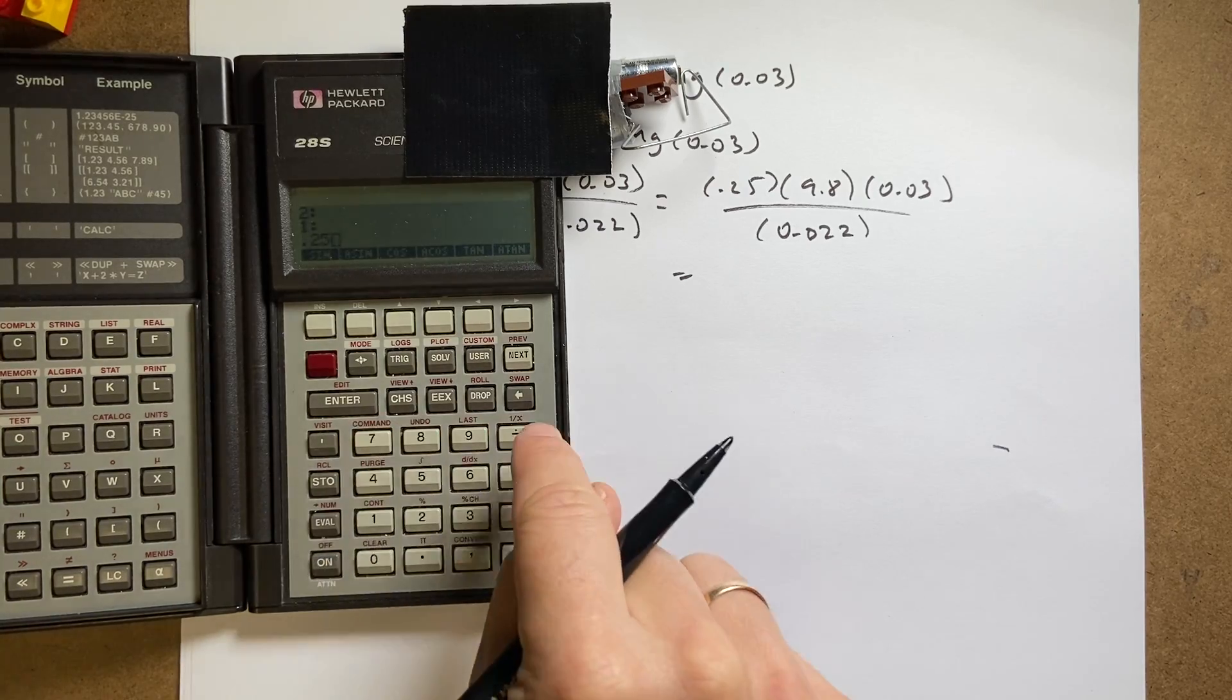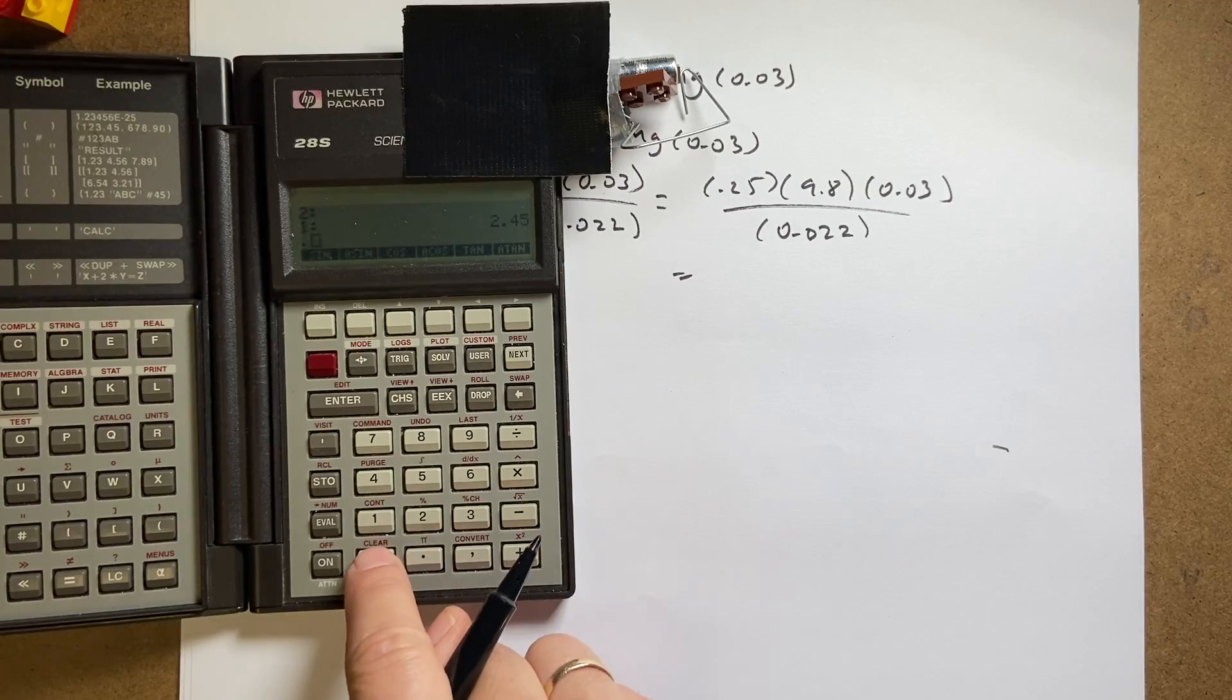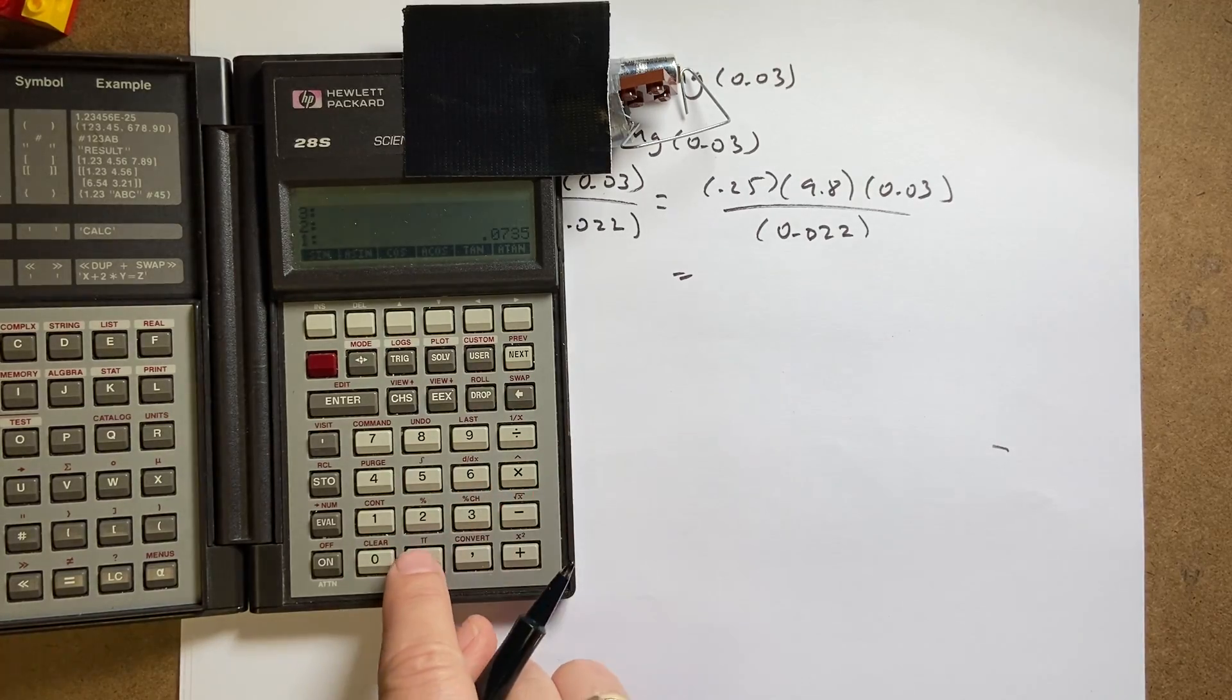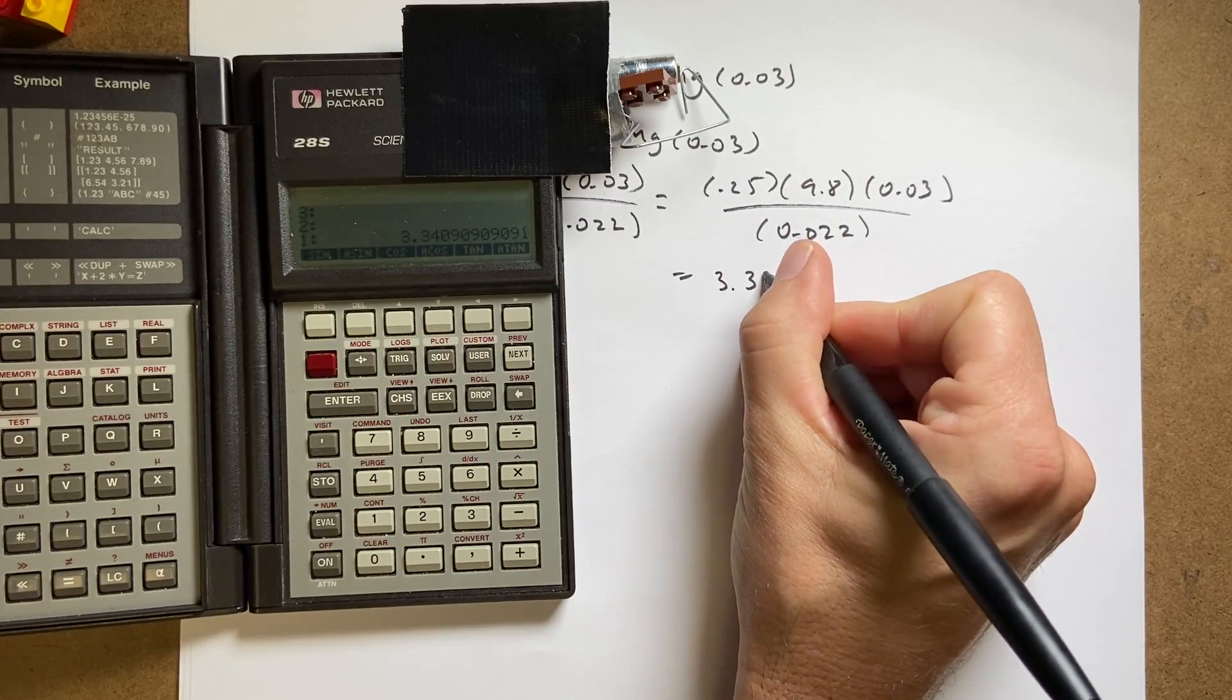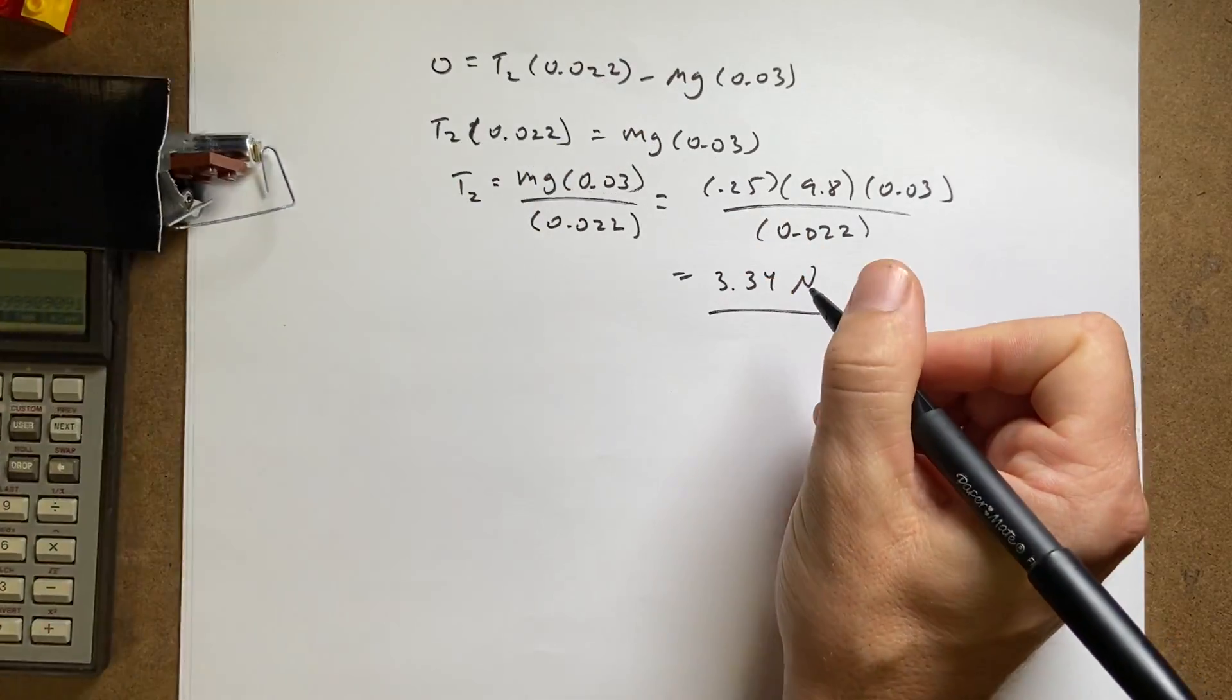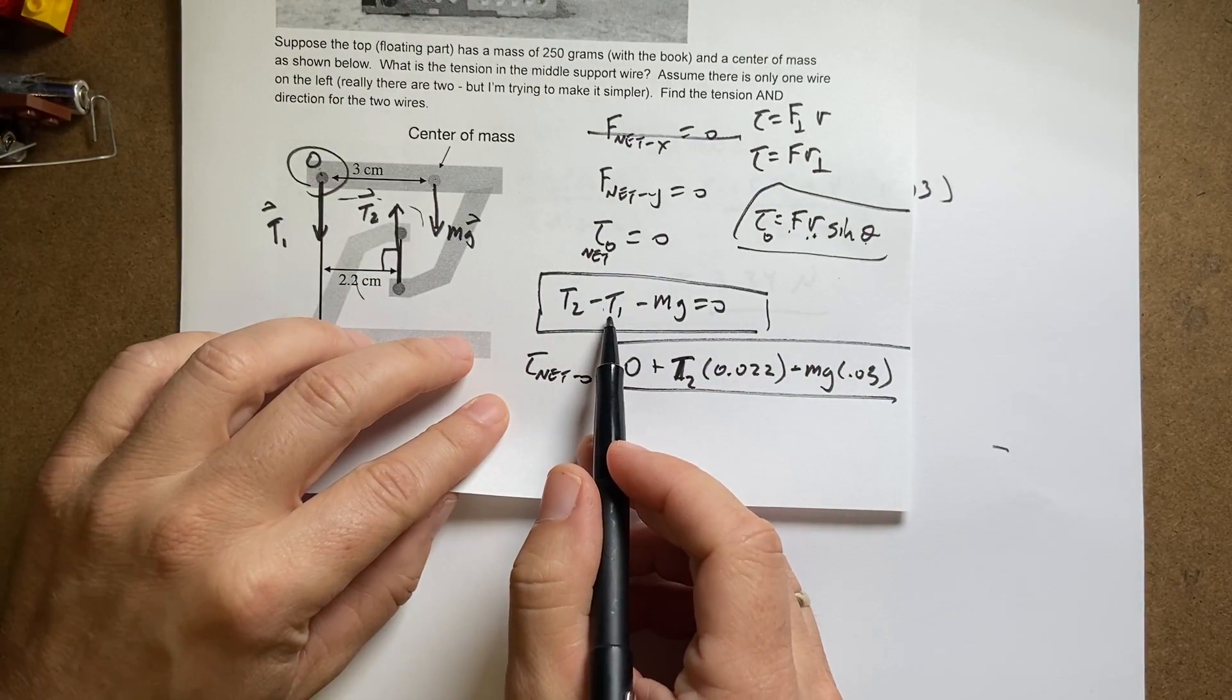0.25, enter, 9.8 times, 0.03 times, and then divide by this, 0.022 divided by, and I get 3.34 newtons. Now I know T2, so I can go back up here and solve for T1.